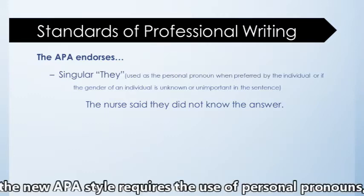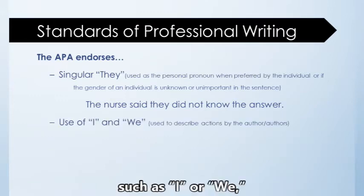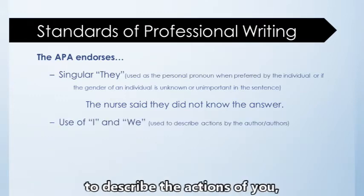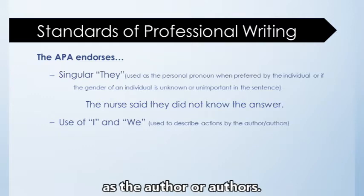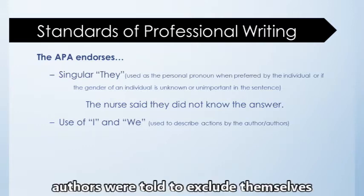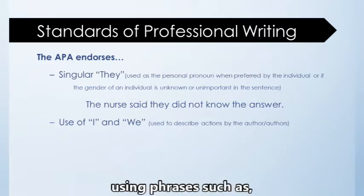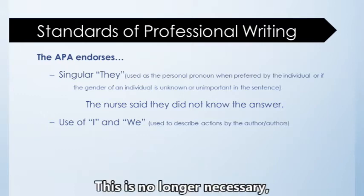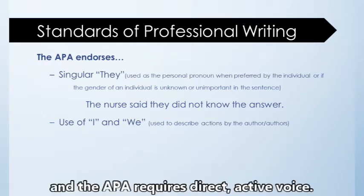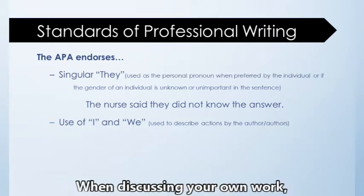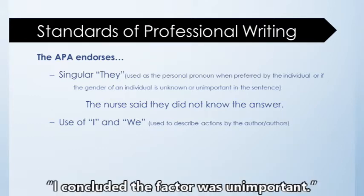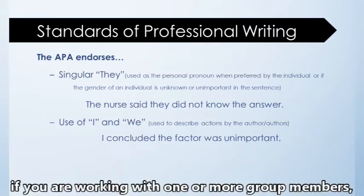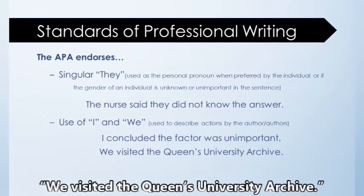Second, the new APA style requires the use of personal pronouns such as 'I' or 'we' to describe the actions of you as the author or authors. Traditionally, authors were told to exclude themselves from their writing, using phrases such as 'the author concluded' or 'it was concluded that.' This is no longer necessary, and the APA requires direct, active voice. When discussing your own work, you would say 'I concluded the factor was unimportant,' or if working with group members, 'we visited the Queen's University Archive.'